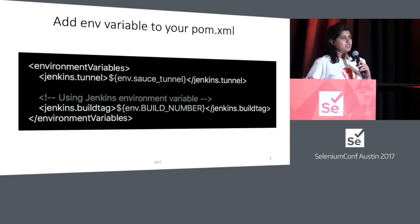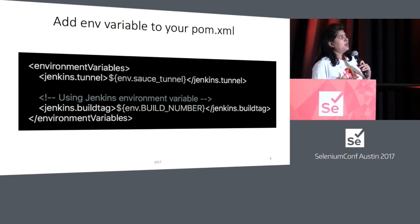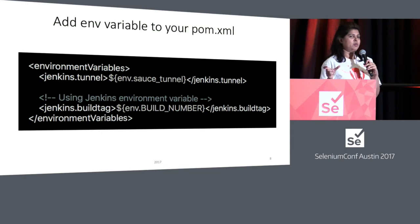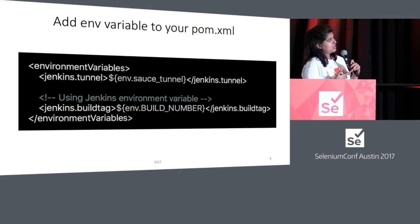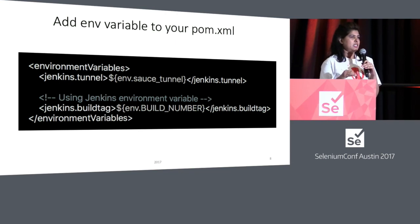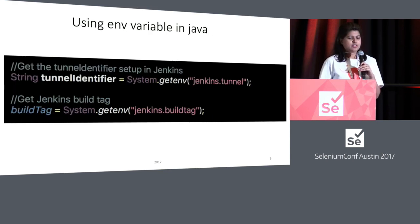Back in the POM file — which is your Maven file — you basically extract it using environment variables. I'm using a tag called jenkins.tunnel and using the exact value I set in the Jenkins job. You can also see I'm using a build number, because for each run I want to make sure I log which build I ran this test or job against.